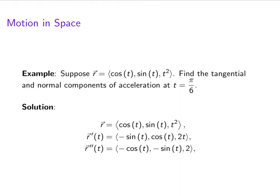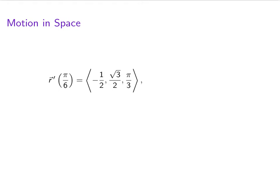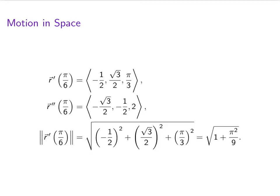So we always want to start by just computing a few derivatives of the vector function. Then we need to plug in pi over 6. And then we need the length of r prime. This one's a bit messy. We end up with square root of 1 plus pi squared over 9.